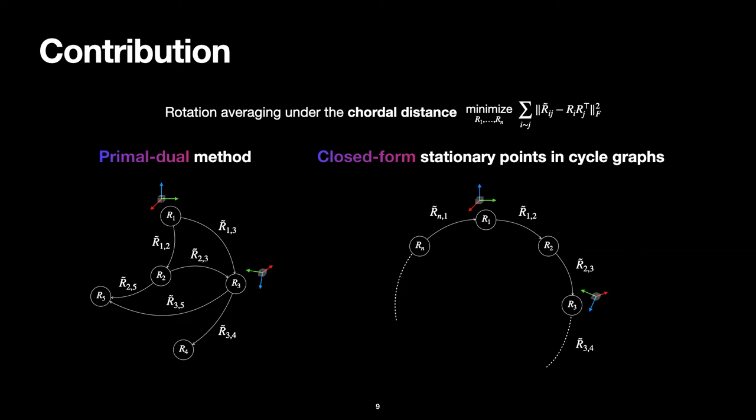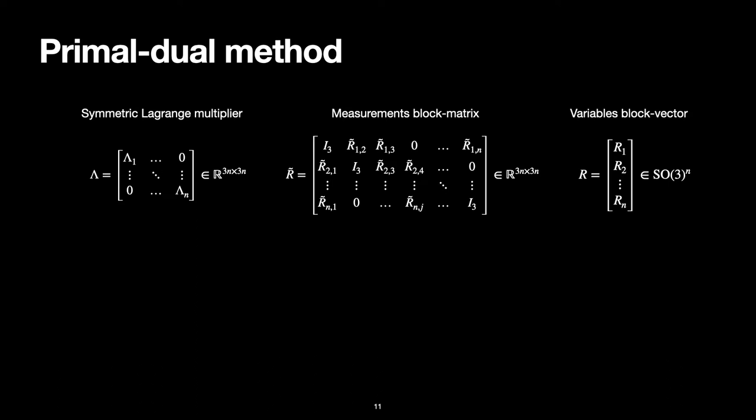Starting with the primal-dual method, I'll lay out the notation. For the Lagrange multiplier, we denote by λ a symmetric block-diagonal matrix as represented on the left. The measurements, denoted by R̃ij, we stack in a 3n by 3n symmetric matrix. The entry ij contains the rotation corresponding to that edge, or a null block if that edge does not exist. Finally, the variables, which are our rotations, we stack vertically on a block vector.